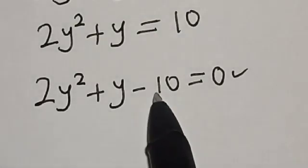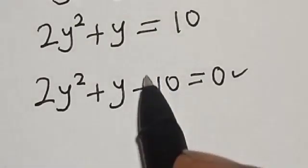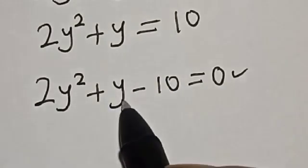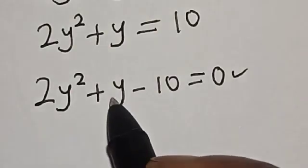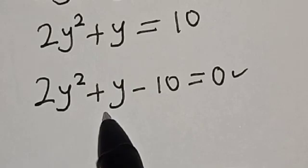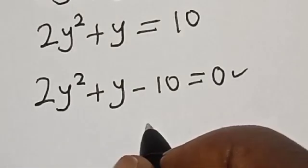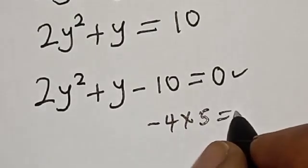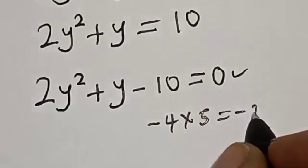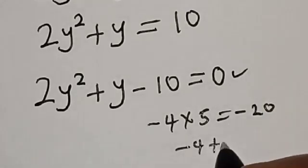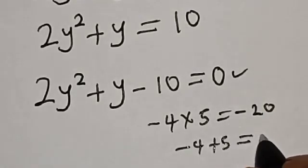If you multiply the coefficient of y squared by the constant — that is 2 times 10 — it gives 20. We look for two numbers such that their product is minus 20 and their sum is plus 1, the coefficient of y. If we take minus 4 and 5: minus 4 multiplied by 5 is minus 20, and minus 4 plus 5 is 1.